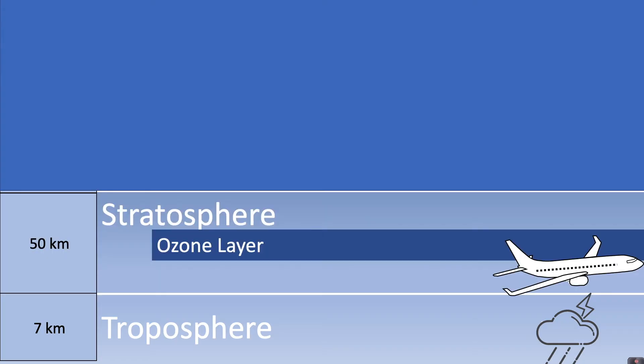Up from the troposphere up to about 50 kilometres, you have the stratosphere. So this is where we have aircraft travel. And also within this layer is the ozone layer, which plays a really important role in maintaining life on Earth because it absorbs and scatters the UV radiation from the Sun.